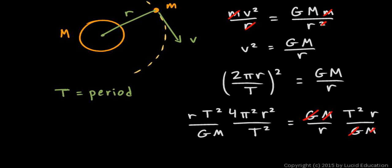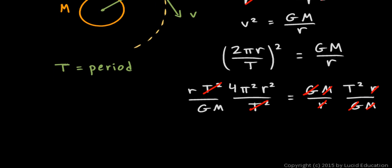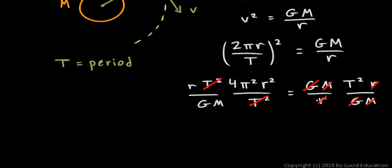The G's cancel, the M's cancel, the r's cancel. Over on the left, the T²'s have canceled, and I'm left with 4π²r³ over GM. Let's write that. I'm going to flip it around and put the T² on the left, so T² equals all of this.